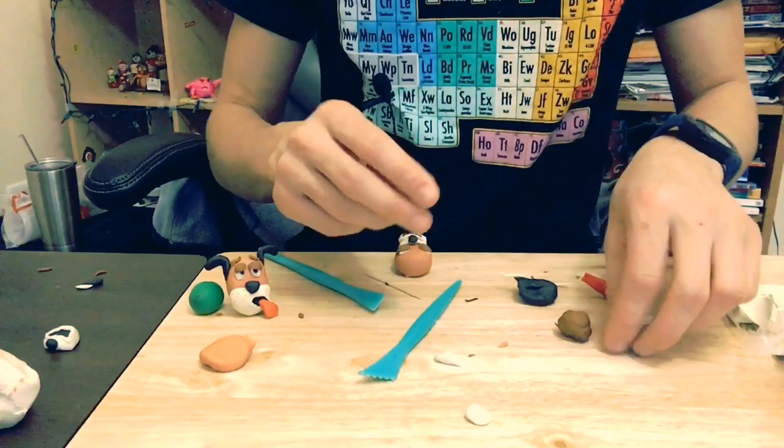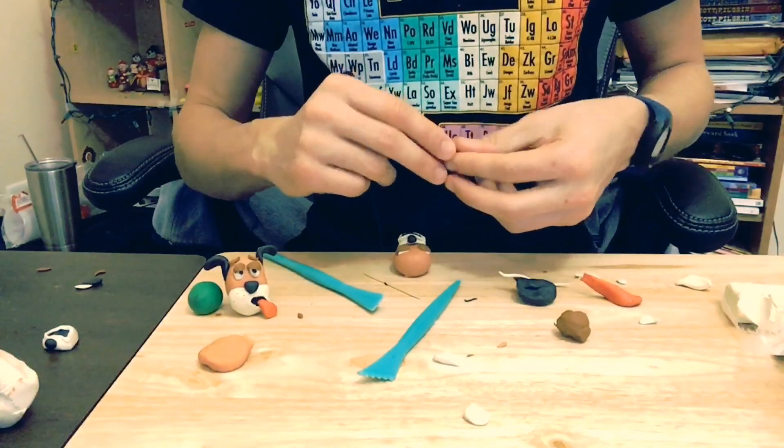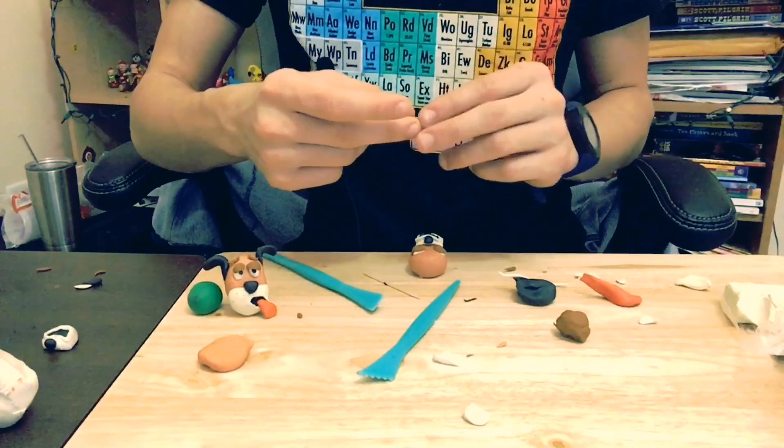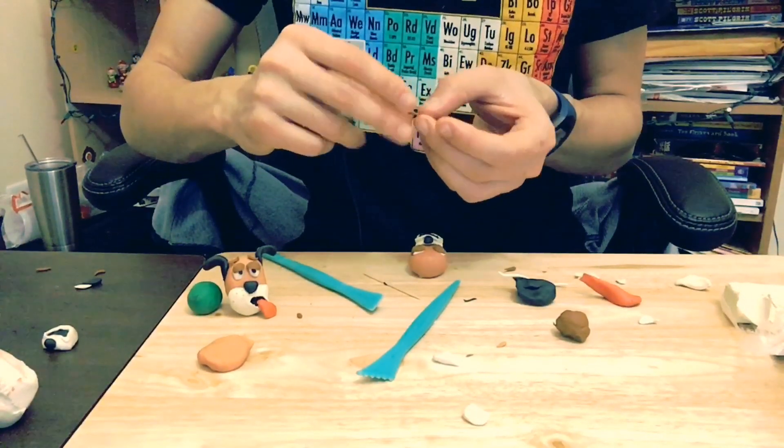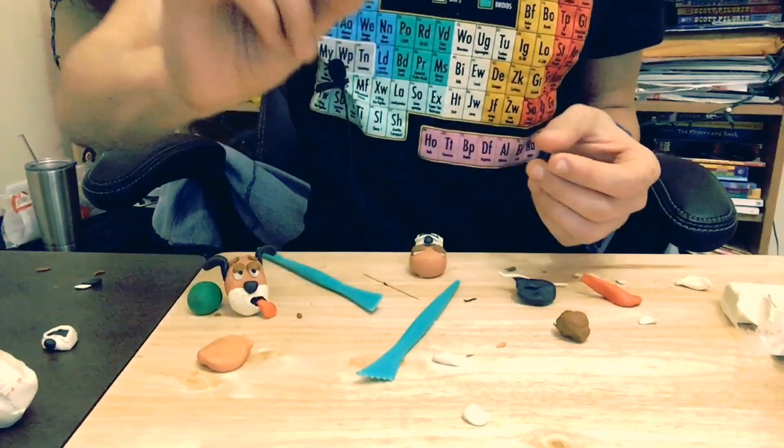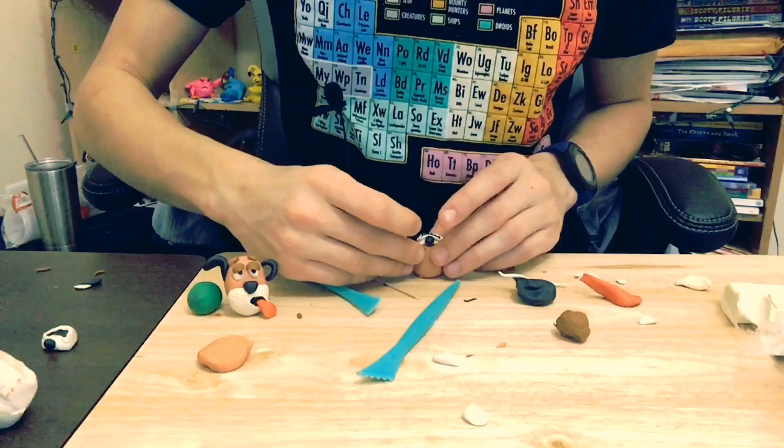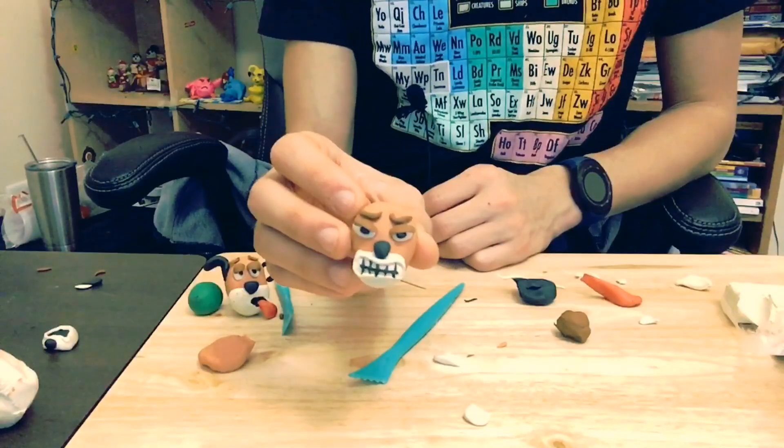There you go. Now for his eyebrows, you want to make them go downward and then curve a little bit at the end, not a whole lot of curve. They're going to look like this. There you go.